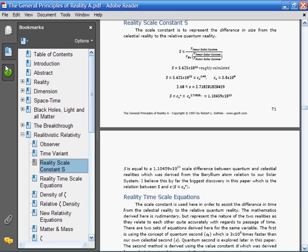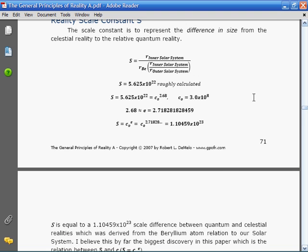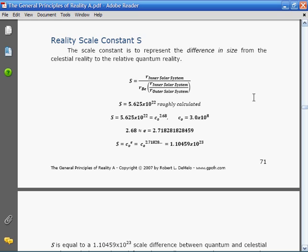The initial S value, which was the difference between the size of the beryllium atom and our solar system, was 5.625 times 10 to the power of 22. This is roughly calculated. Then I related it to the speed of light, which was 3.1 times 10 to the power of 8. I noticed that c to the power of 2.68 was equal to 5.625 times 10 to the power of 22.